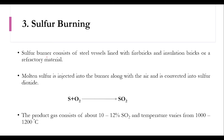In the sulfur burner, the burner consists of a steel vessel lined with fire bricks, insulation bricks, and refractory material to avoid heat loss. Molten sulfur is injected into the burner along with air and is converted to sulfur dioxide. The product gas consists of about 10 to 12% sulfur dioxide, and the temperature reaches 1000 to 1200°C.